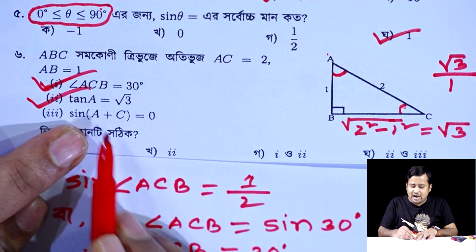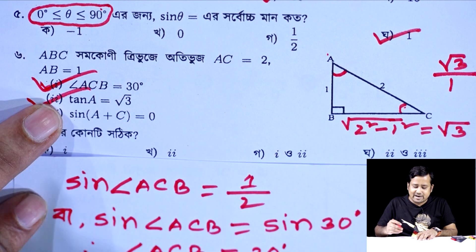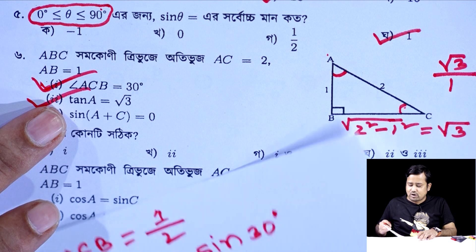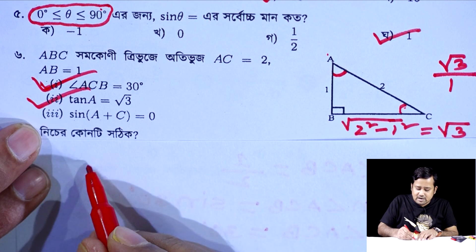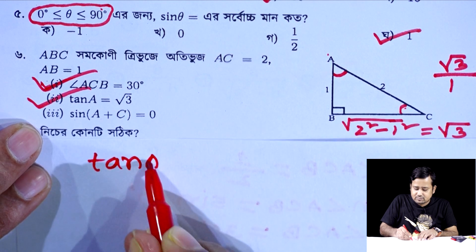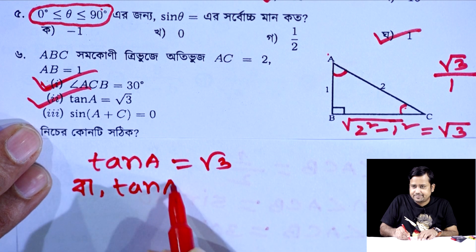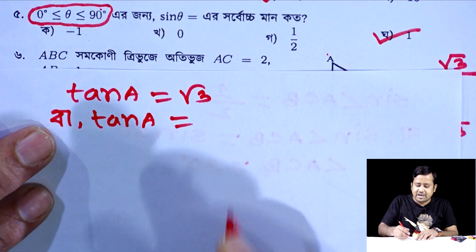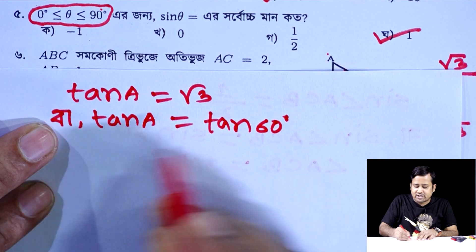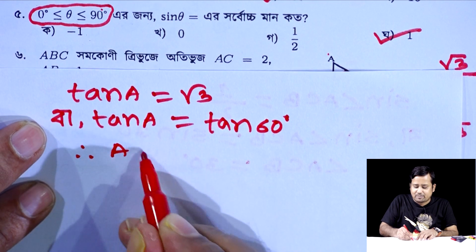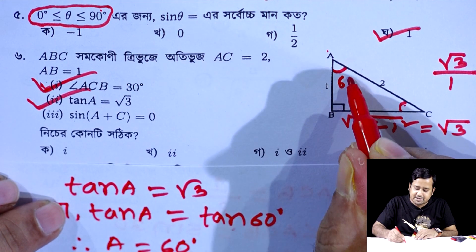We have tan A equals root 3. We need to determine angle A. Since tan A equals root 3, and root 3 is tan 60 degrees, we have A equal to 60 degrees.